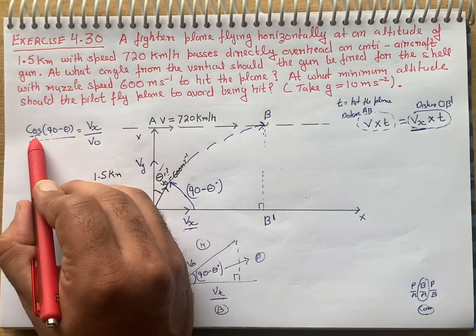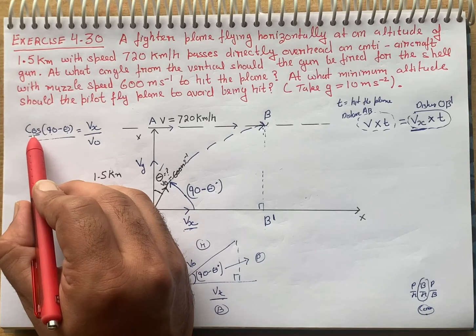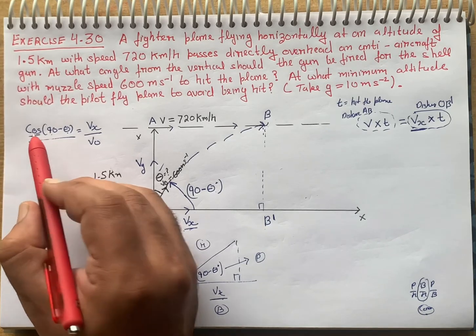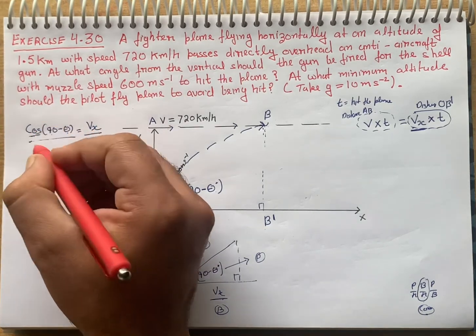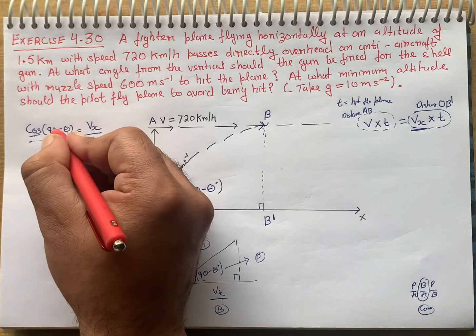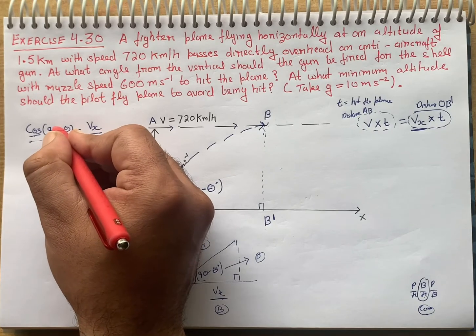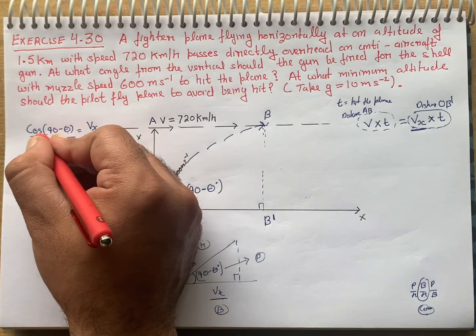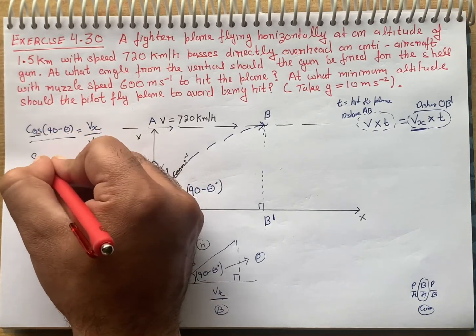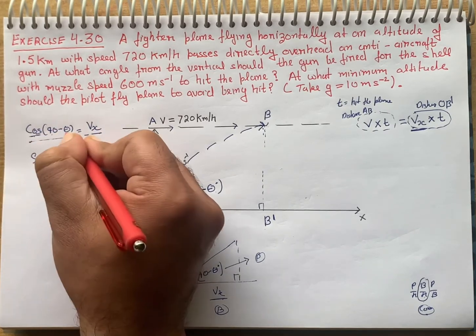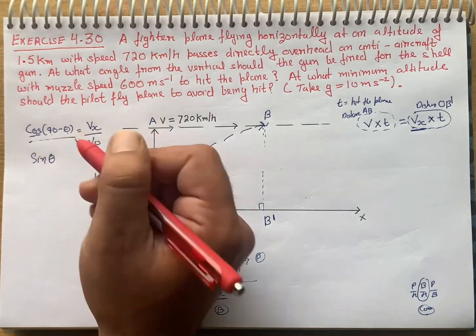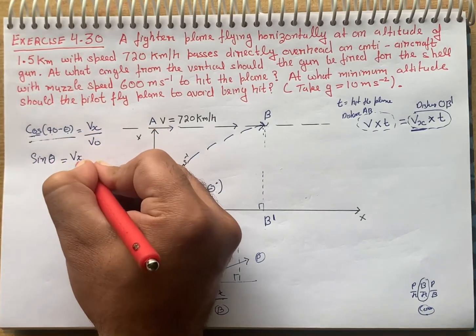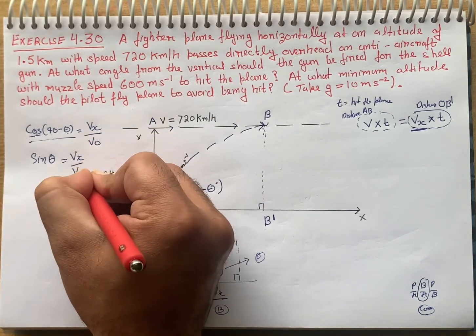Base here is velocity in x direction upon initial velocity of gun V0. Now from last 10th math, chapter trigonometry, we know: whenever we subtract any angle from 90, the trigonometric function changes — cos becomes sin, sin becomes cos. So cos(90 - theta) becomes sin theta. So 90 disappears and we get sin theta.